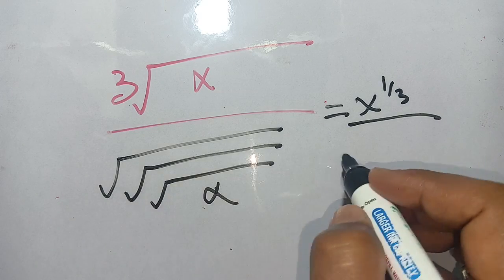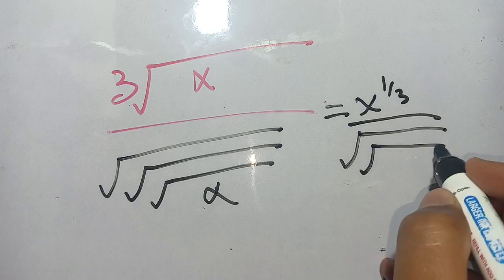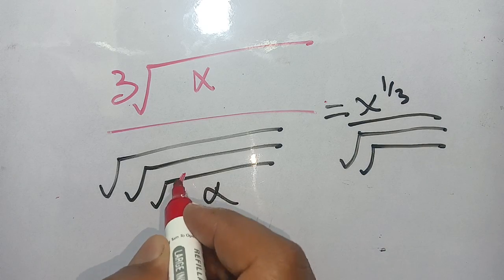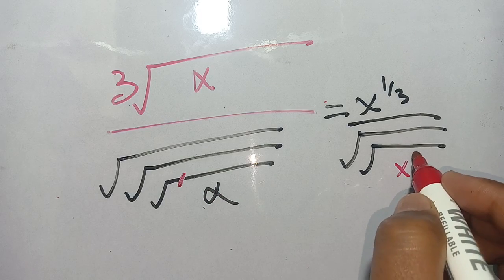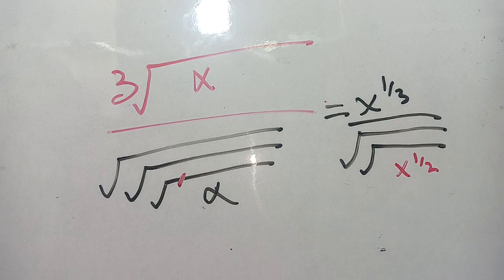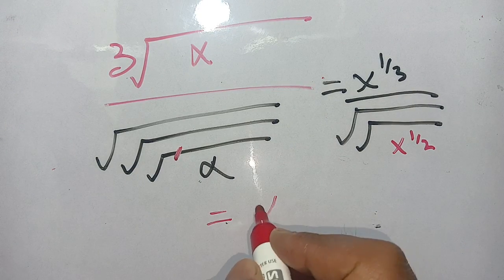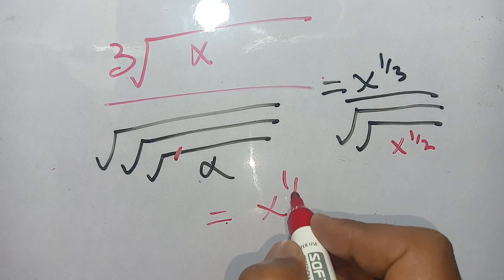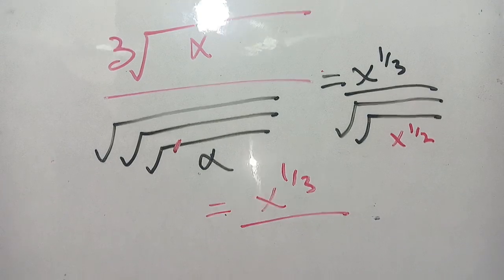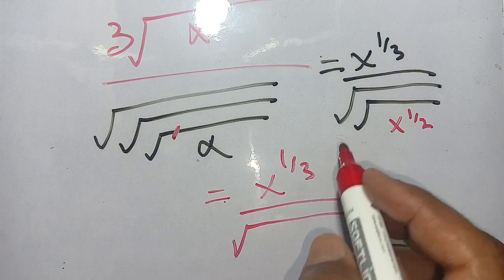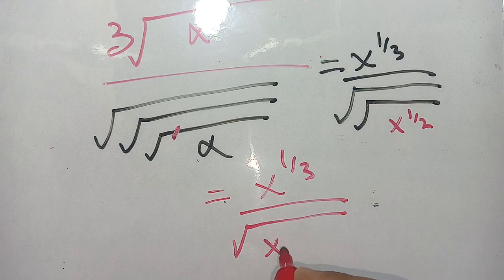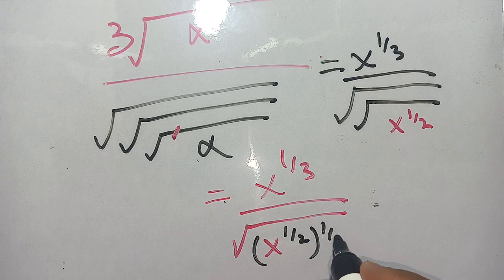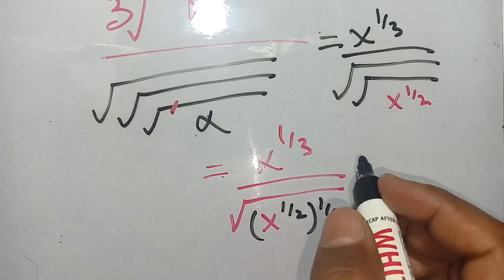In the next step, dividing by the nested square roots: when we remove the first square root, we write the power of x as x power 1 divided by 2. Then removing the second square root, we write the power as x power 1 divided by 2 times 1 divided by 2.